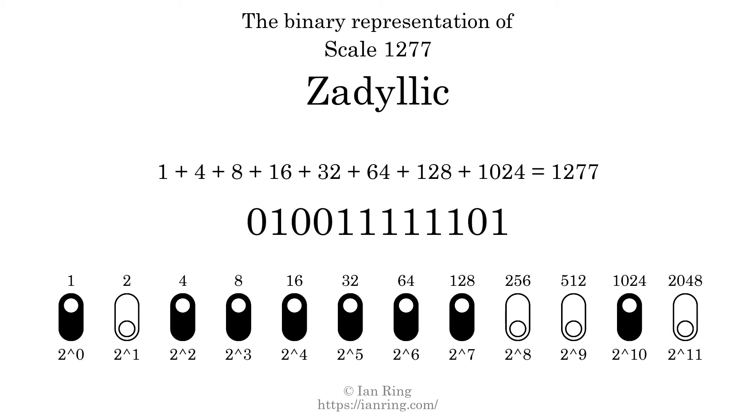The scale number not only enumerates the scale with a unique index, but it also literally describes the tonal content of the scale. Represented as a binary number in base 2, the scale number is 0, 1, 0, 0, 1, 1, 1, 1, 1, 1, 1, 0, 1.